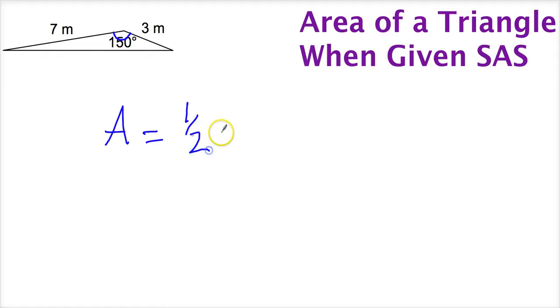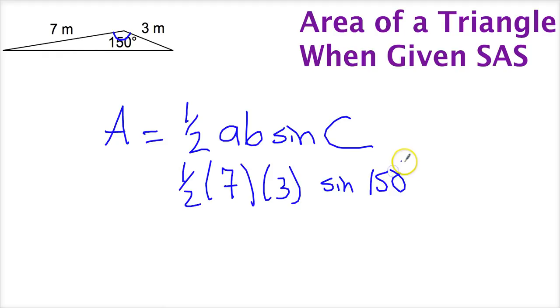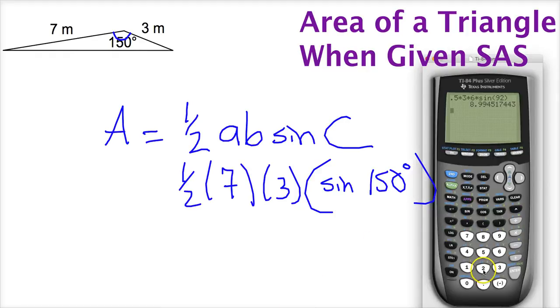So once again, area equals one half base times height. And we're going to modify that out so it's one half A times B times sine C. 7 times 3 times sine of 150 degrees. And really these are simple as soon as you figure out how they work. So 0.5, or you can use one half if you like. Let's make a fraction. Why not?